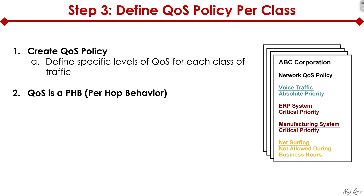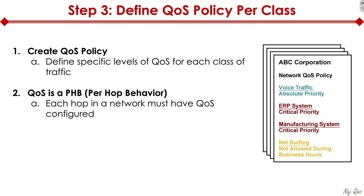One important thing to keep in mind: QoS is a per-hop behavior, or PHB. Each device in our network — each router, each switch — must have quality of service configured on it for the policy to operate correctly. If you have a server plugged into a switch, that switch into another switch, and that switch into a router connecting to the internet, that entire chain must have QoS configured. Every single hop must have QoS; otherwise it's not going to work. That's the only way it works — when every hop understands how traffic must be treated when it arrives and sits in the queue.